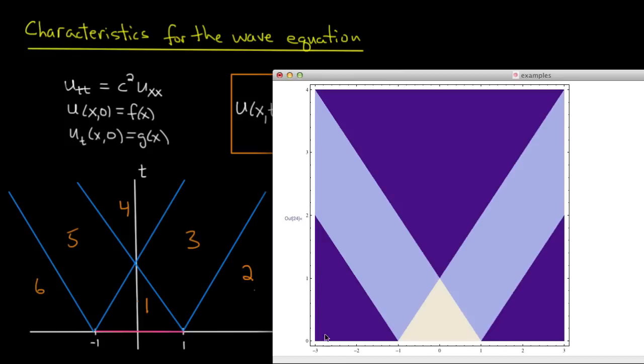And the value of u is given by a color. So in white we have the value u equals 1, in the sort of in-between blue color it's 1/2, and in the darker purple it's 0. So you can see exactly the solution that we just described, and you can see these characteristic lines appearing in the density plot of the solution u.